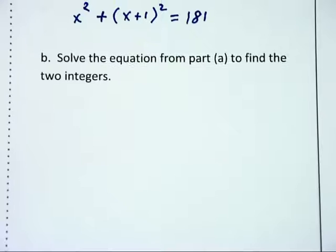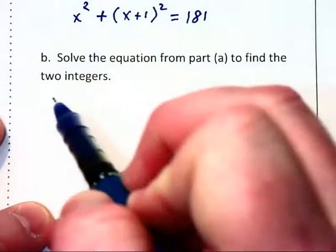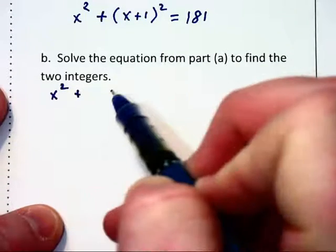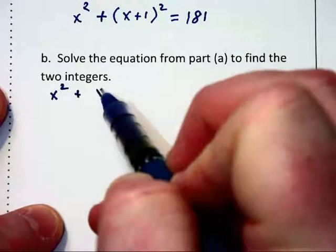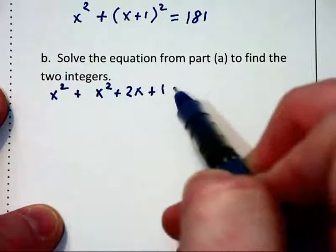In part b we're asked to solve this equation. So let's begin by foiling out that second parenthesis. We're going to have x plus 1 times x plus 1, making x squared plus 2x plus 1 equals 181.